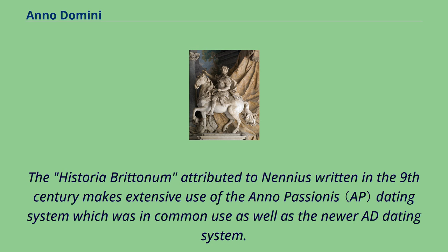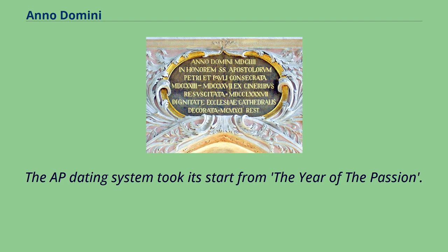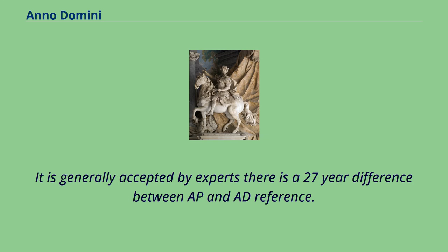The Historia Brittonum, attributed to Nennius, written in the 9th century, makes extensive use of the Anno Passionis dating system, which was in common use as well as the newer AD dating system. The AP dating system took its start from the year of the Passion. It is generally accepted by experts that there is a 27-year difference between AP and AD reference.